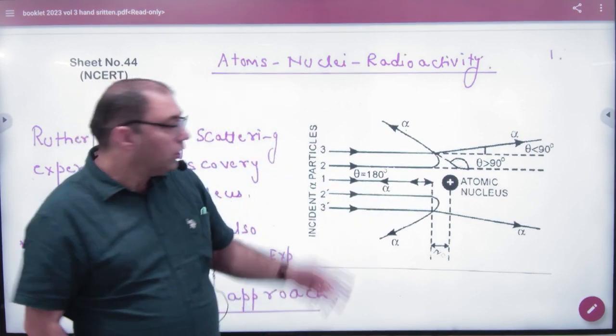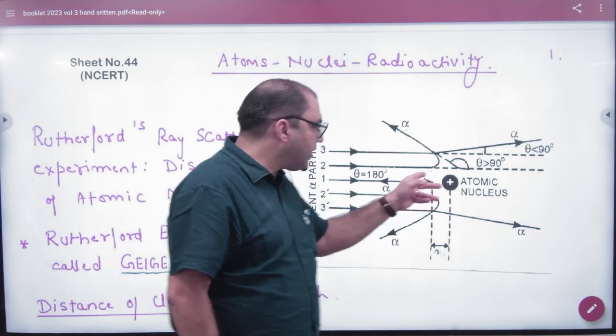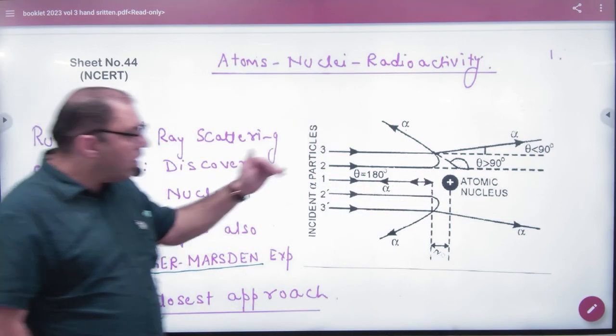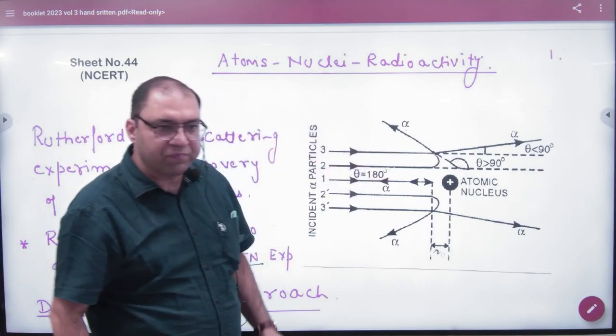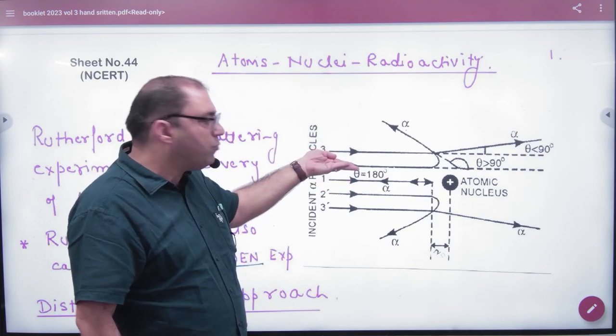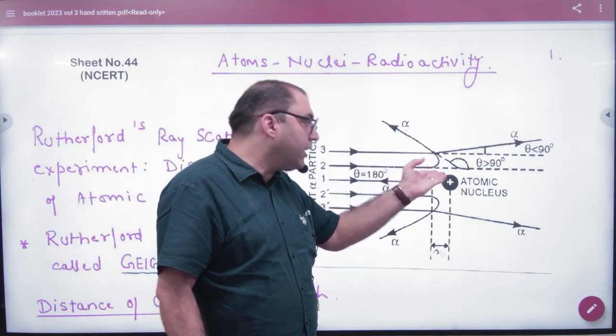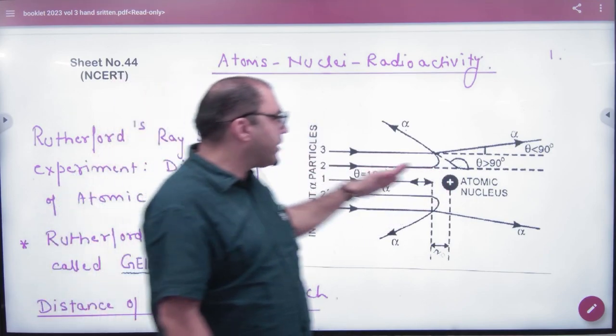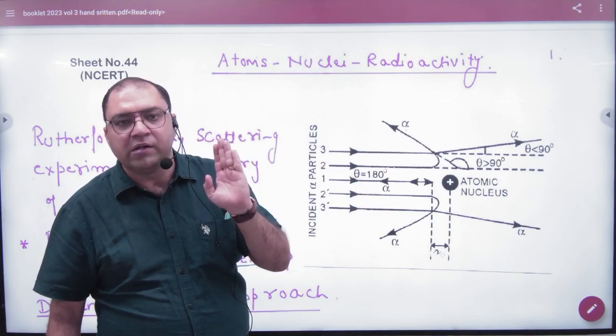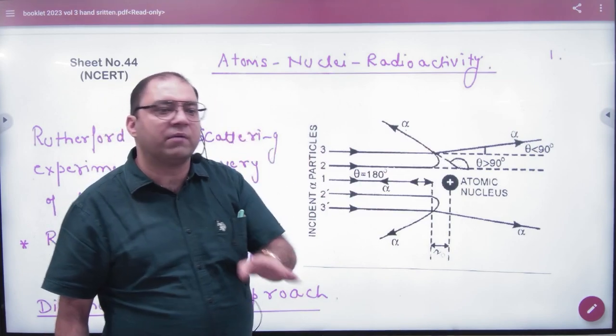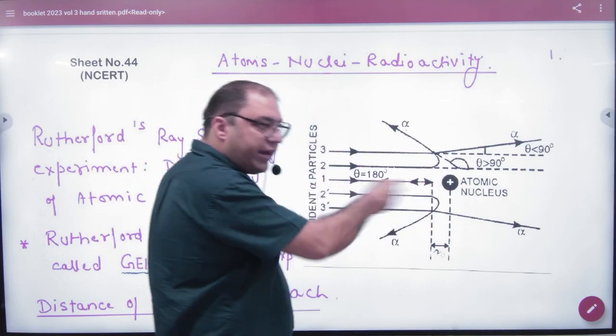So these alpha particles will come and the path will go back from the path. But the alpha particles have greater than 90 degrees deflection, a good deflection. I mean a good force of repulsion and it was a lot because it was trying to collide head-on.